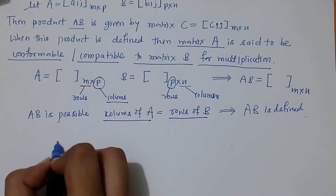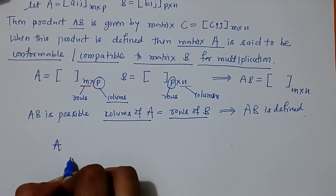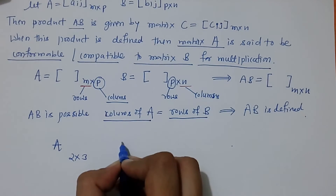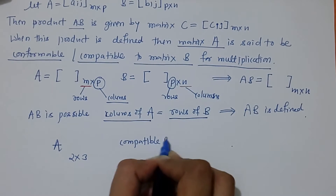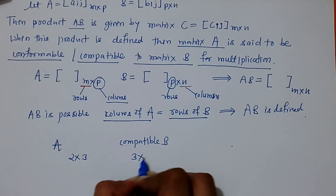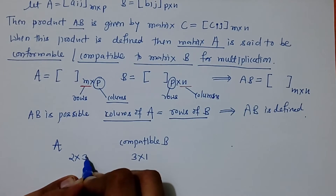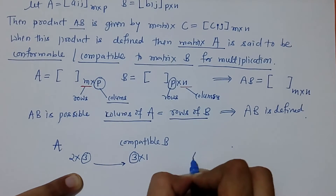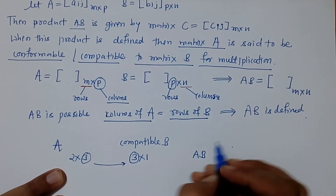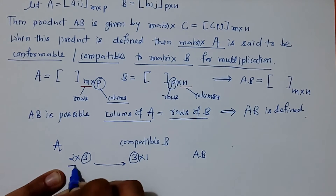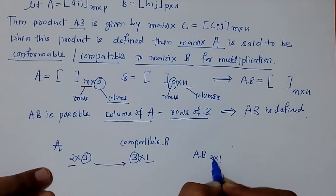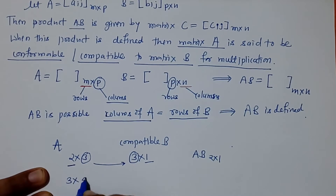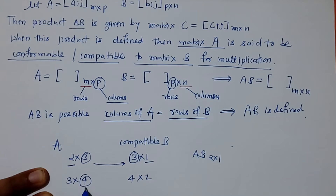We can check this with examples. If matrix A is of order 2 by 3 and matrix B is of order 3 by 1, we check that the number of columns of A equals the number of rows of B. So product AB is defined, and the order of the result is the remaining dimensions: 2 by 1.